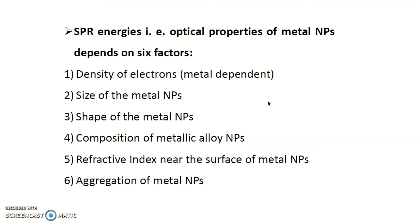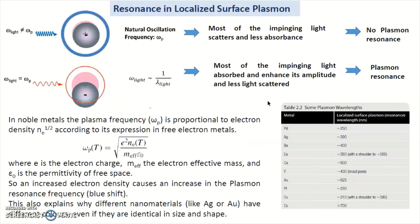The metal absorbs that wavelength in that region. In the last lecture, we also saw that it depends on the plasmon frequency, and we tried to understand how the resonance takes place in localized surface plasmon, particularly in case of metal nanoparticles.